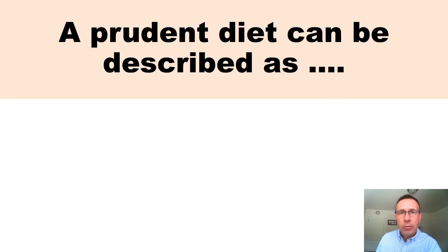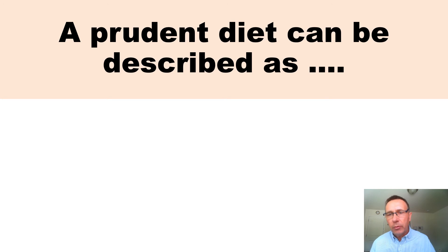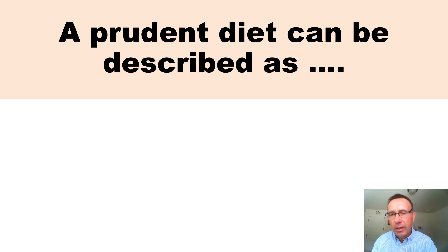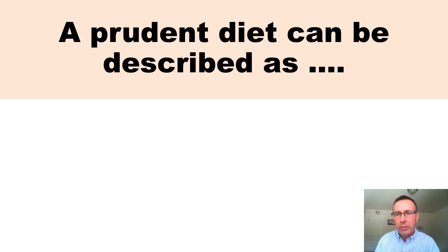A prudent diet is one based predominantly on fruits, vegetables, and whole grains, and may have small amounts of meat but limits or avoids processed meat and limits red meat.